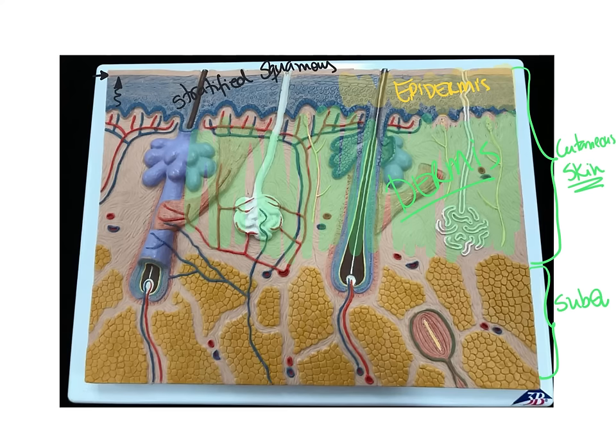Besides being released due to increased body temperature, sweat can also be released due to emotional stress — if we are anxious, embarrassed, or afraid. That is what you know as cold sweat. It is the same sweat gland, but the sweat is being released for a different reason.